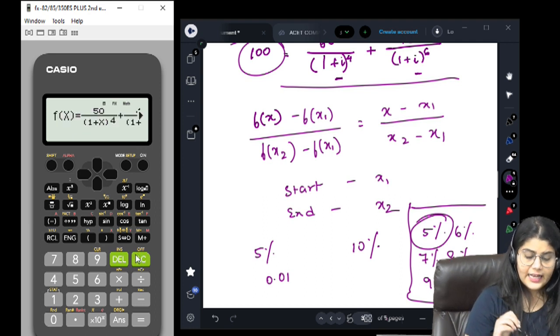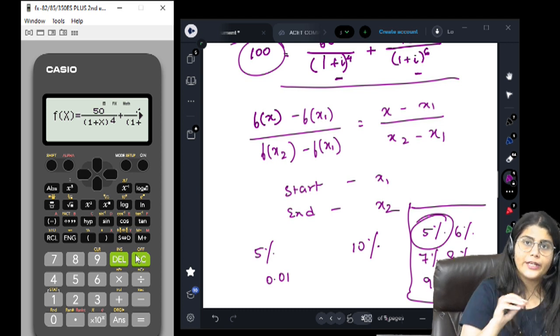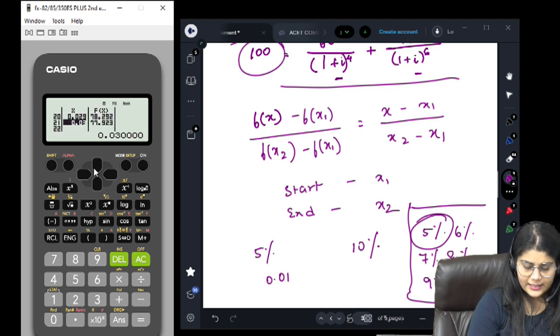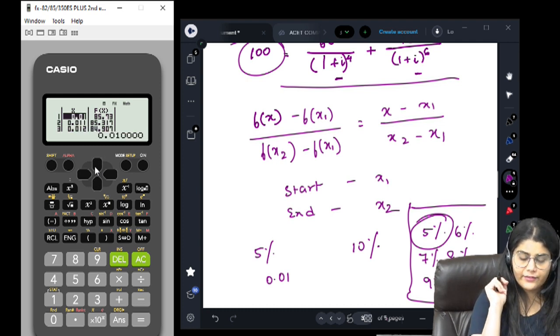I press AC, it takes me back to my equation area. Again I press equal to. This time, let's say I will start with 1% and I will end at 3%. And I am increasing the step to 0.001. Now, as I can see, even at 1%, I am not getting an answer. It is 85.73. Now I will interpolate between 0 and 1. I will start at 0, I will end at 1, and I will keep a step of 0.001.